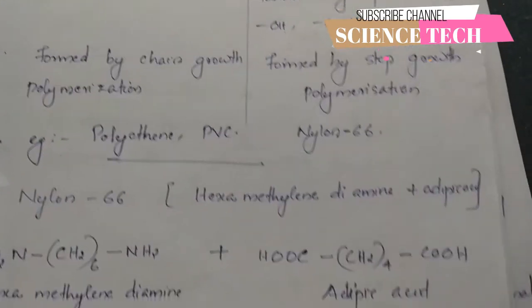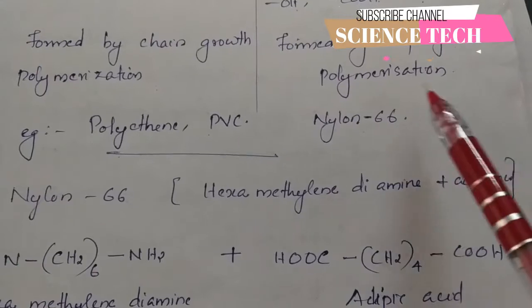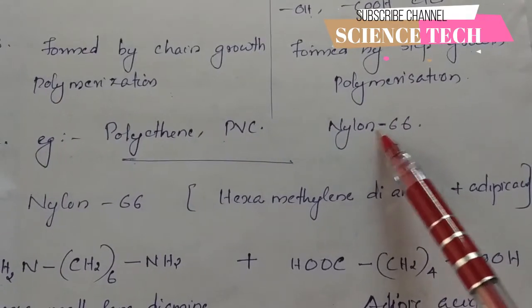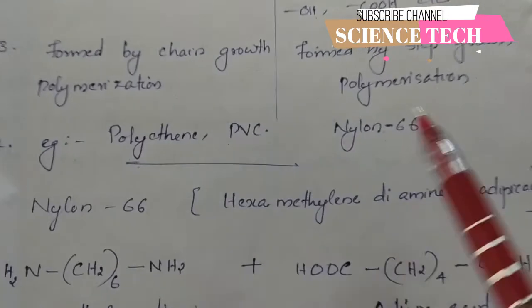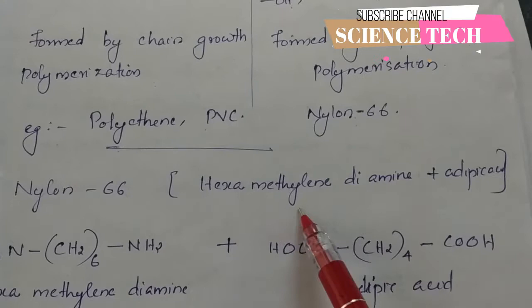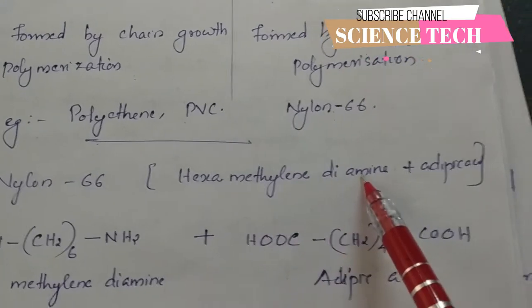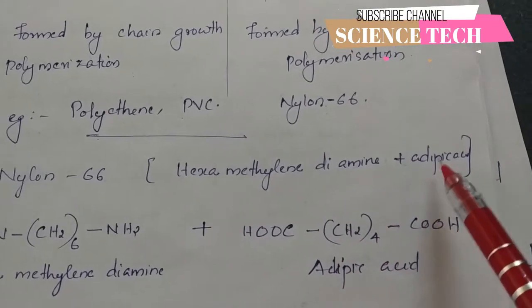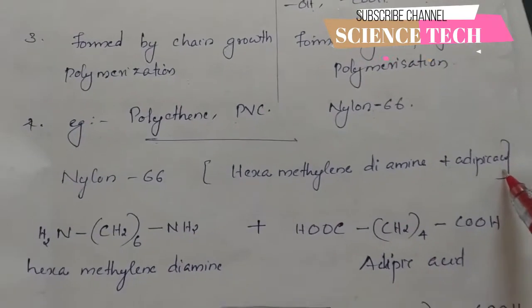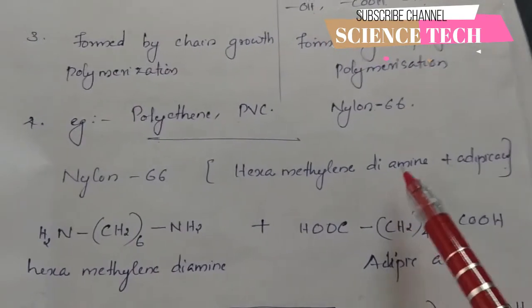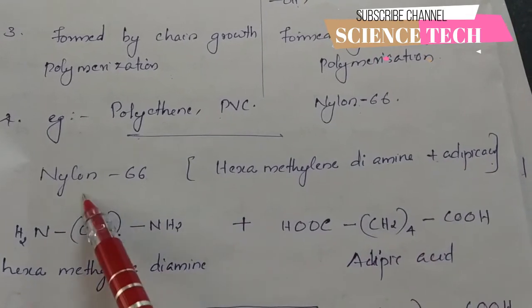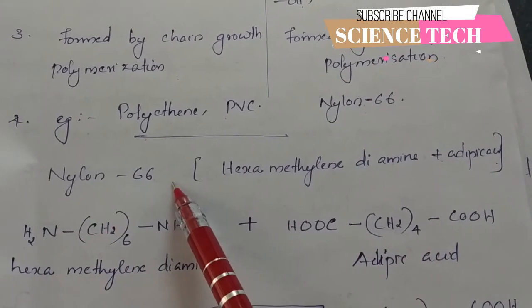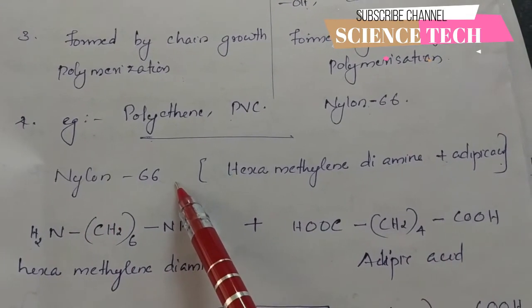An example of addition polymerization is PVC. An example of condensation polymerization is Nylon 66, formed from hexamethylenediamine and adipic acid.